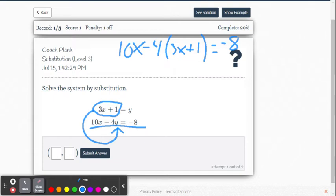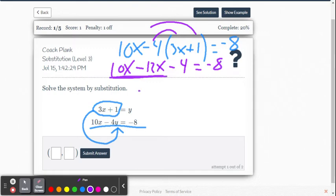All right, so now we're going to solve this. Let's distribute the negative 4. So we get 10x minus 12x minus 4 equals negative 8. Now we're going to combine like terms here, and we get negative 2x minus 4 equals negative 8.